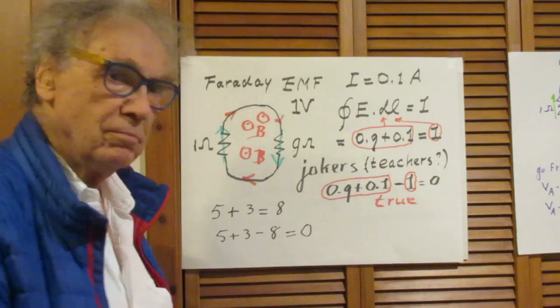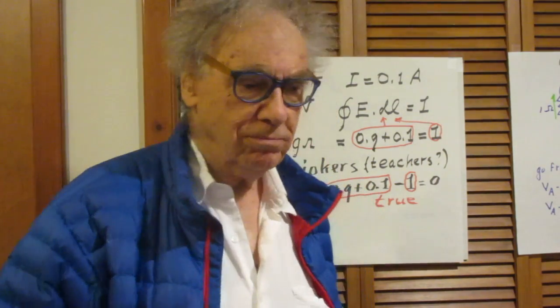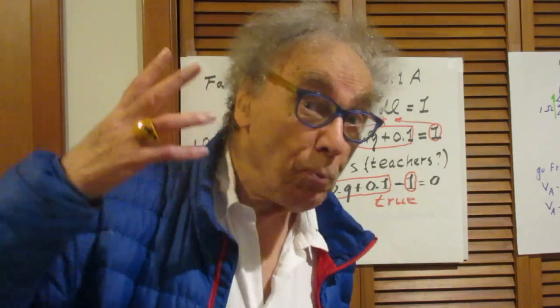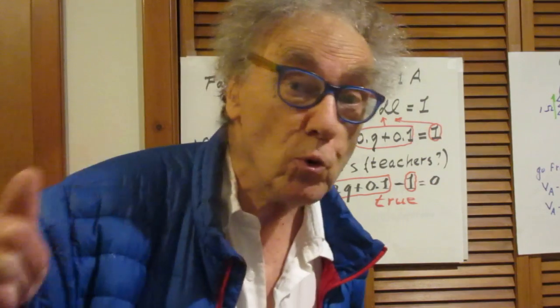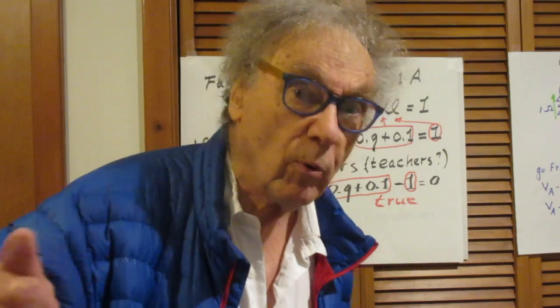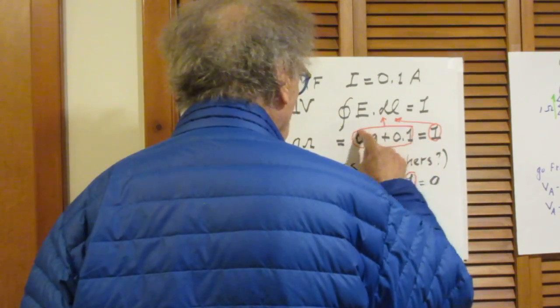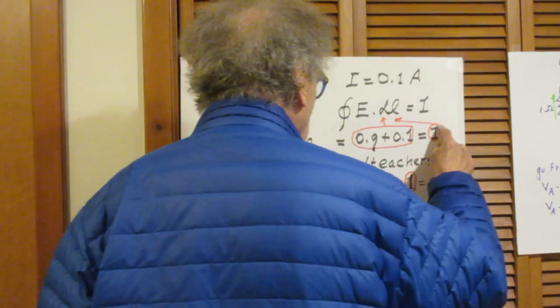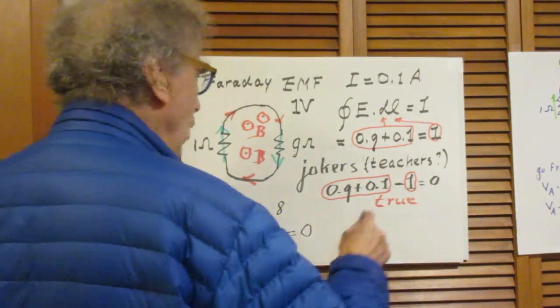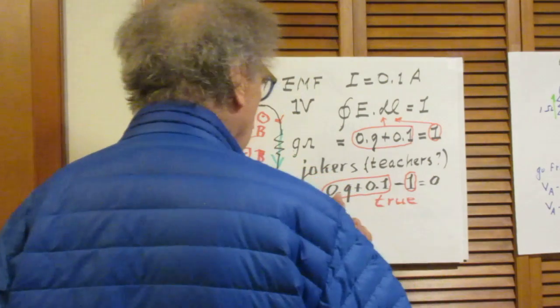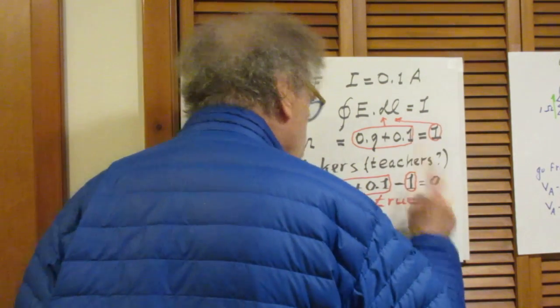Now comes the conviction, the proof, unmistakable proof, that Kirchhoff's Loop always works. Because look now how they're going to rewrite this equation. Keep in mind, this is the closed loop integral E dot L. And this is also the closed loop of E dot L.